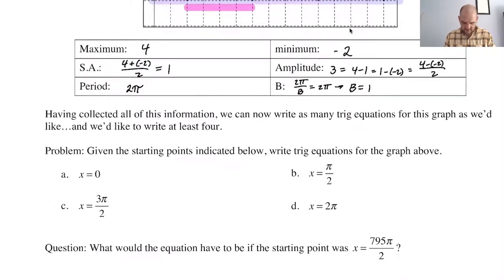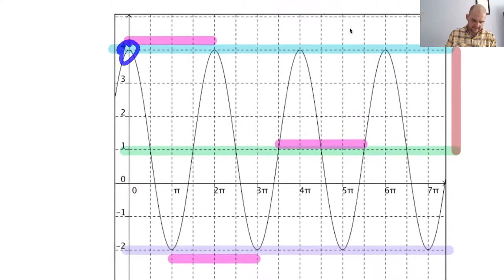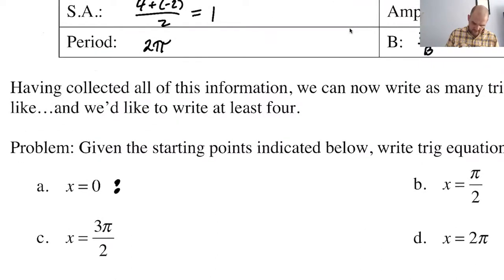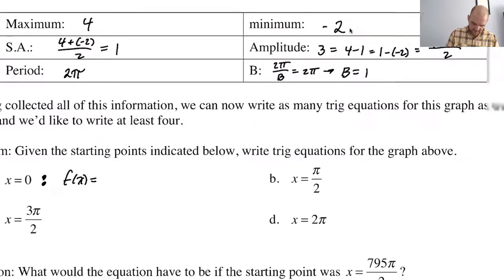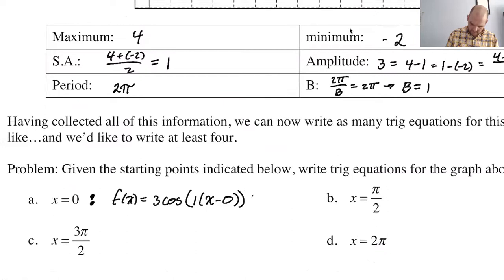So given the starting points indicated below, write trig equations for the graph above. Okay. So here we go. If I'm going to start at x equals zero, let's figure it out. So it's a positive cosine because you're starting at a maximum. So f of x equals positive three because the amplitude is three cosine. B is one X. The shift is zero because we're starting at zero. And then the sinusoidal axis is one. So if we graph that, we will get exactly the graph that we are looking at.